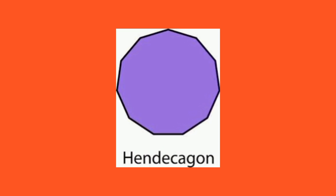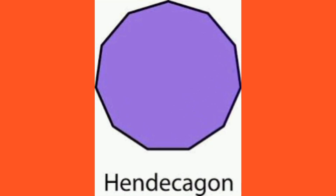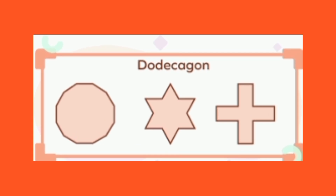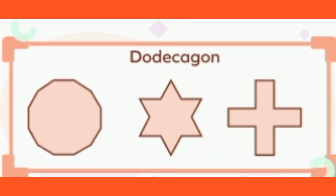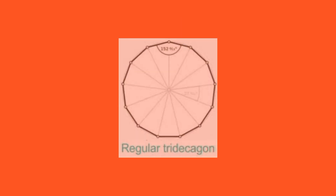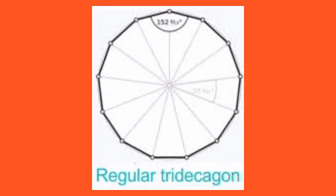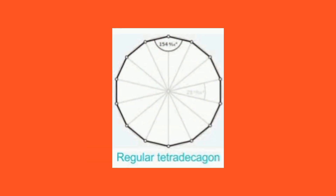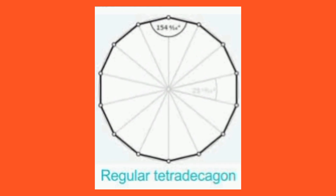Hendecagon — these are shapes with 11 sides. Dodecagon — these are shapes with 12 sides. Tridecagon — these are shapes with 13 sides. Tetradecagon — these are shapes with 14 sides.